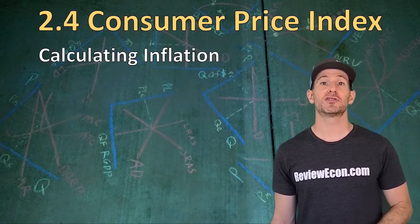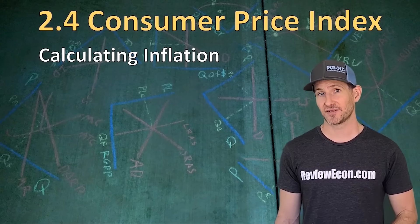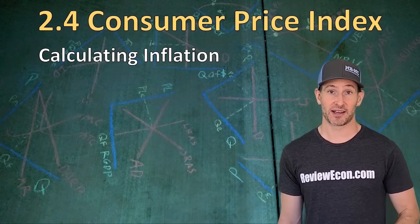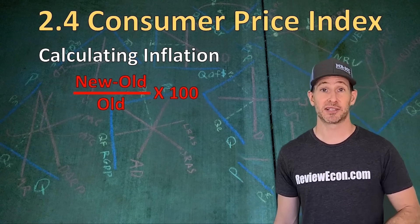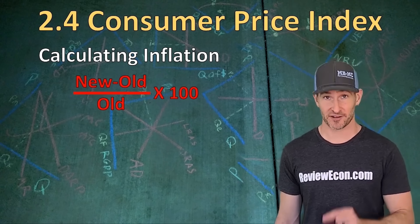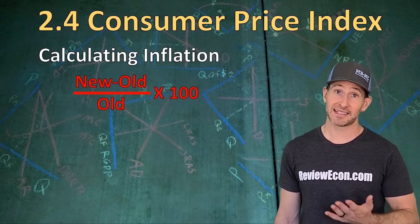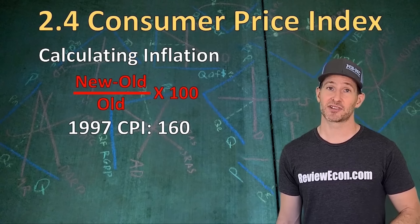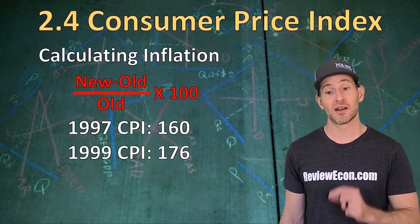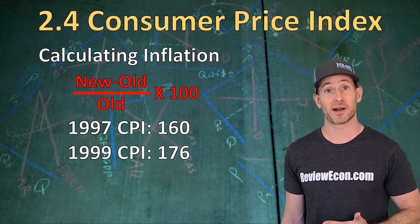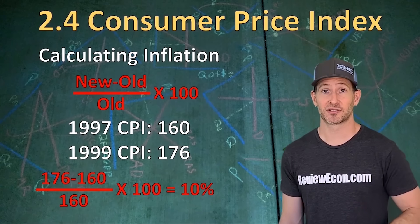If you are given two CPIs or two GDP deflators, you can calculate the amount of inflation between two years using this formula: new minus old, divided by old, times 100. You probably used a similar formula for elasticity coefficients back in micro. So if in 1997 we had a CPI of 160 and in 1999 a CPI of 176, we can calculate 10% inflation between those two years.